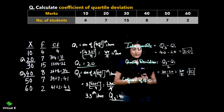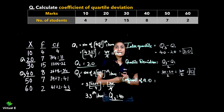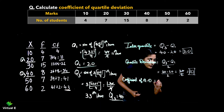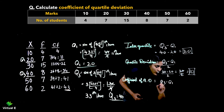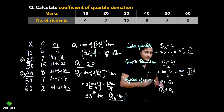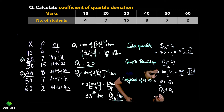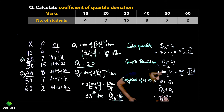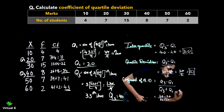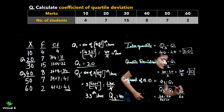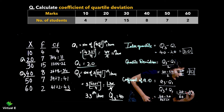Next, we find the coefficient of quartile deviation. The formula is Q3 minus Q1 upon Q3 plus Q1. So we compute 40 minus 20 upon 40 plus 20, which gives 20 upon 60. When you solve this, the final answer is 0.33.